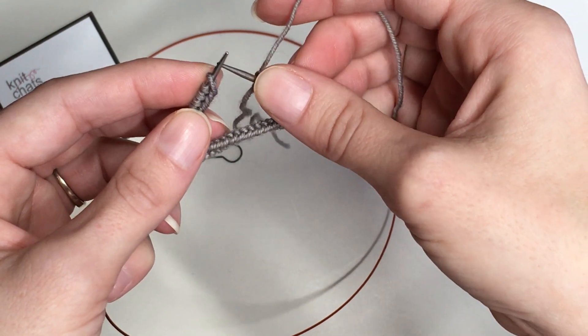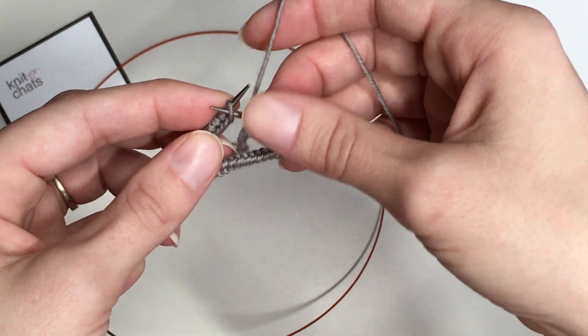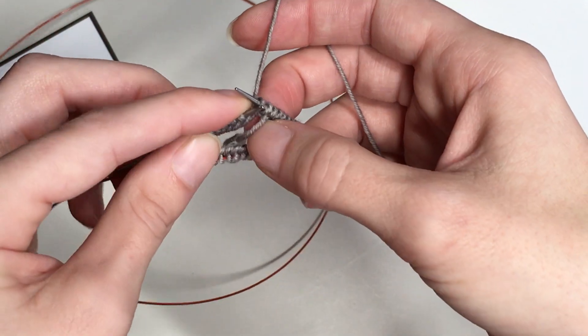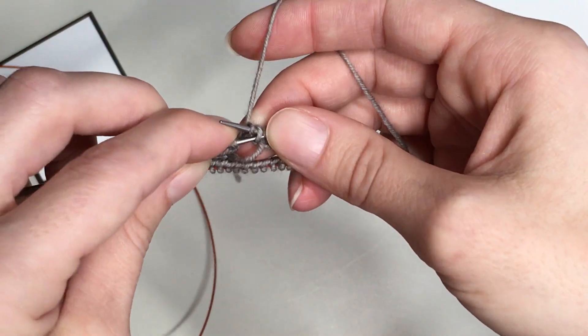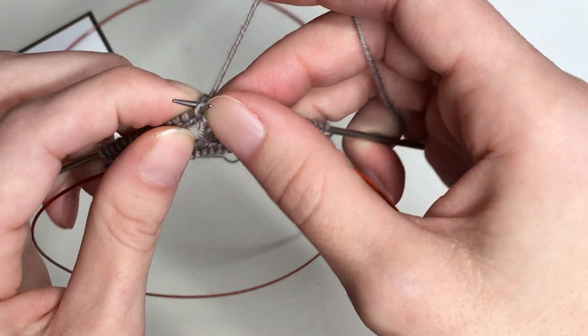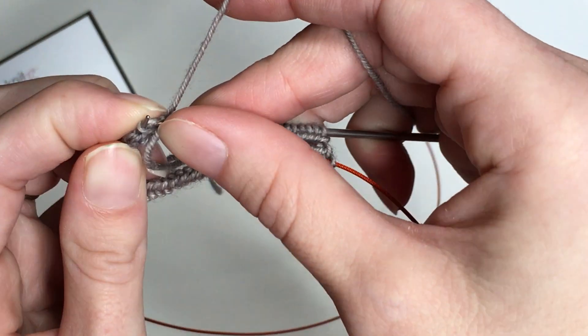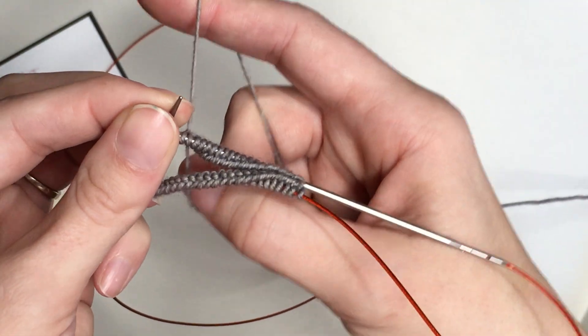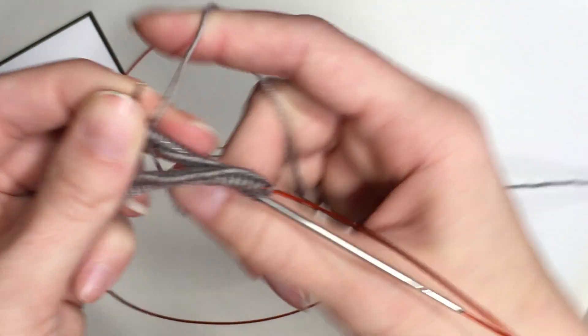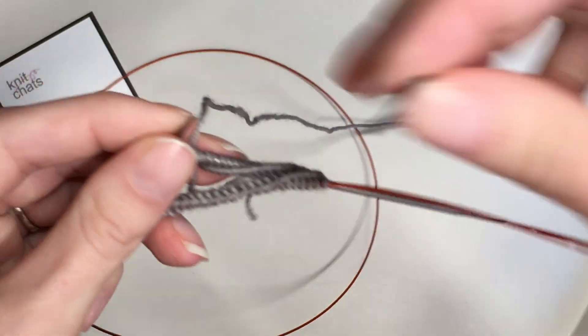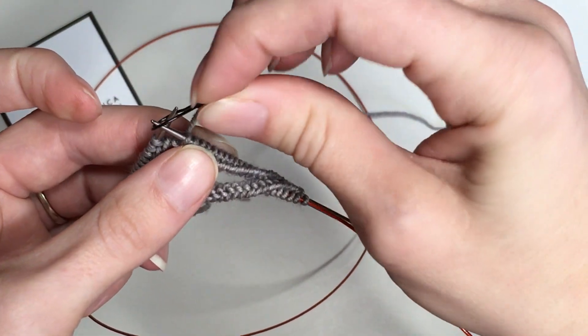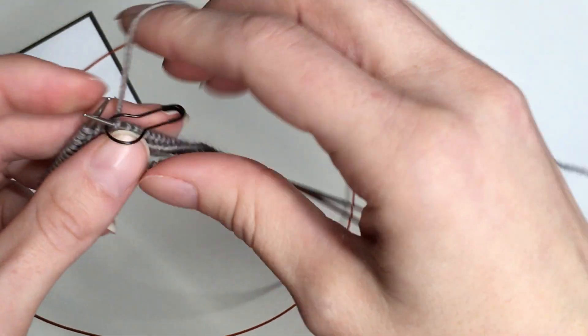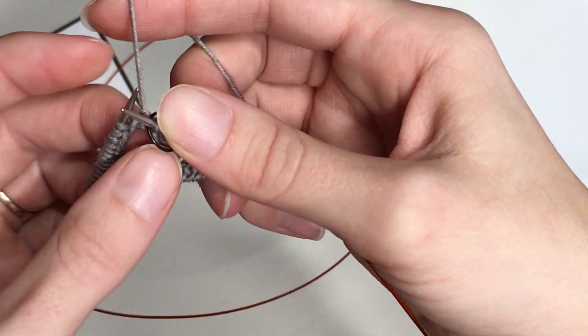I'm going to slip that first stitch that I cast on onto my right hand needle. And this very last stitch that I just cast on, I'm slipping it over the stitch and off the needle and between the needles, and cinching really nice and snug, and placing my stitch marker for in the round knitting.